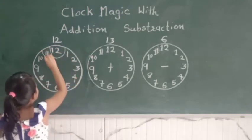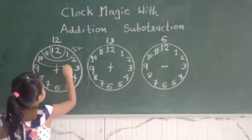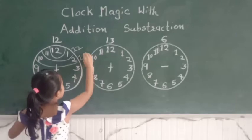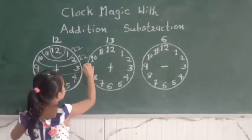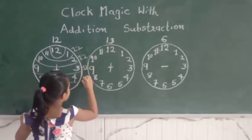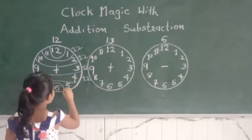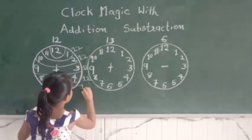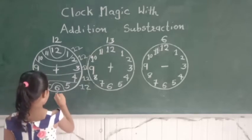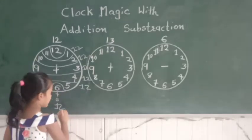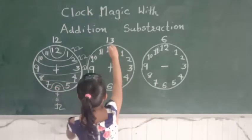11 plus 1 is 12. Then 10 plus 2 is 12. 9 plus 3 is 12. 8 plus 4 is 12, and then 7 plus 5 is 12. And then 6 plus 6 is 12.